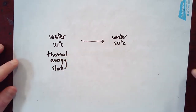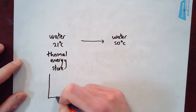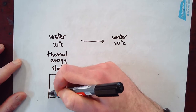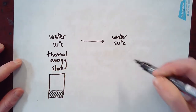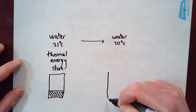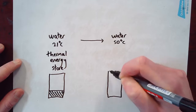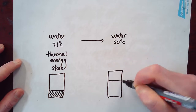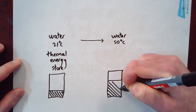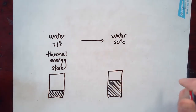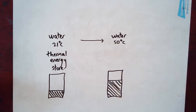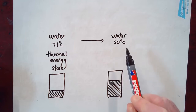I could symbolize that simply: if I draw the thermal energy store as a box, it starts off with a small amount of energy in that thermal energy store, but then I heat it up and it's now got more energy in that store. I've added some energy into its thermal energy store, and the temperature has risen accordingly. So by adding energy into the thermal energy store, I've increased the temperature. That's the first of our stores and it's called the thermal energy store.